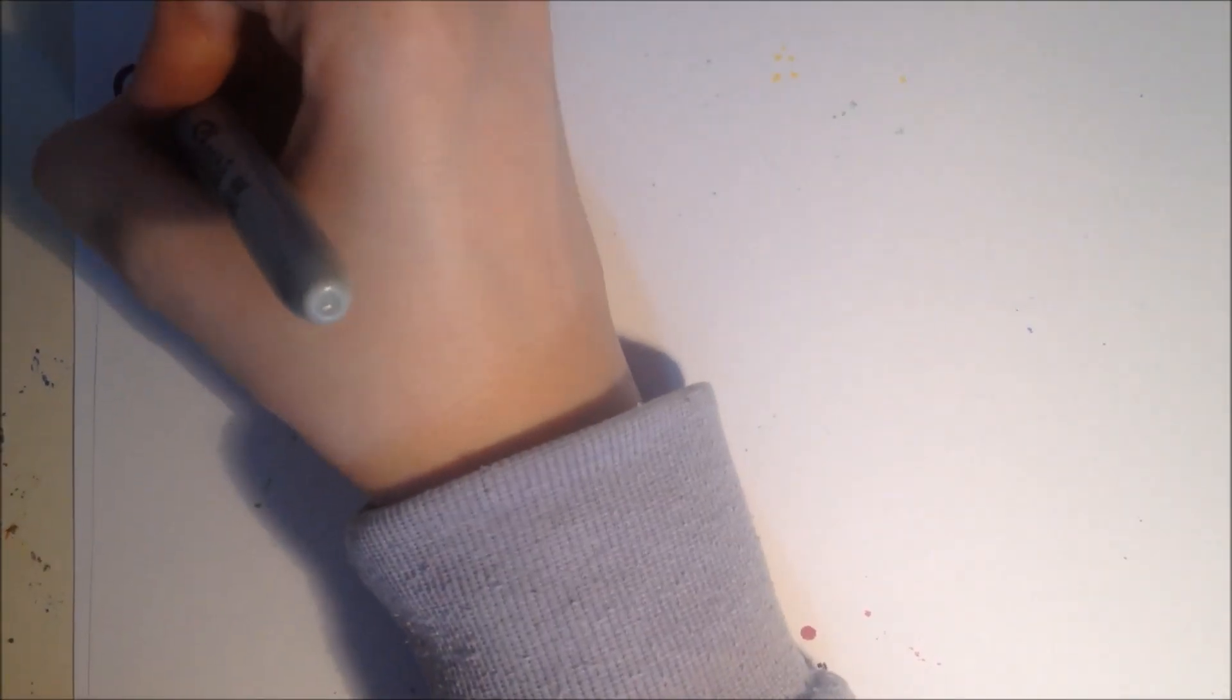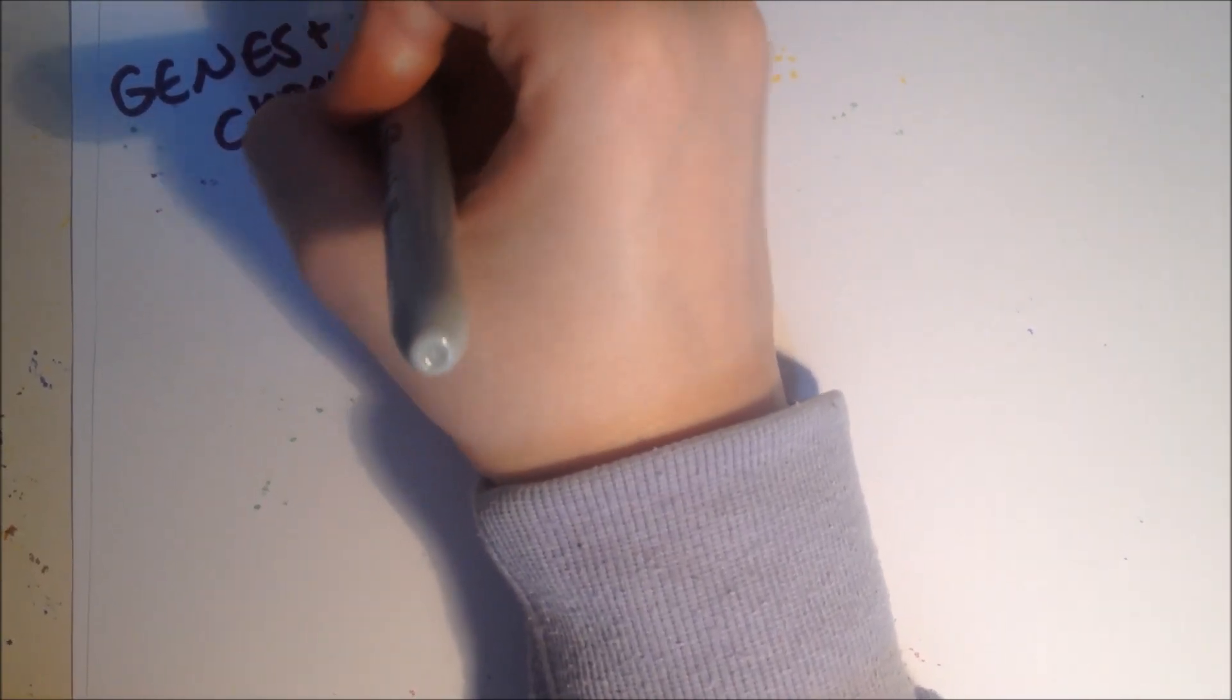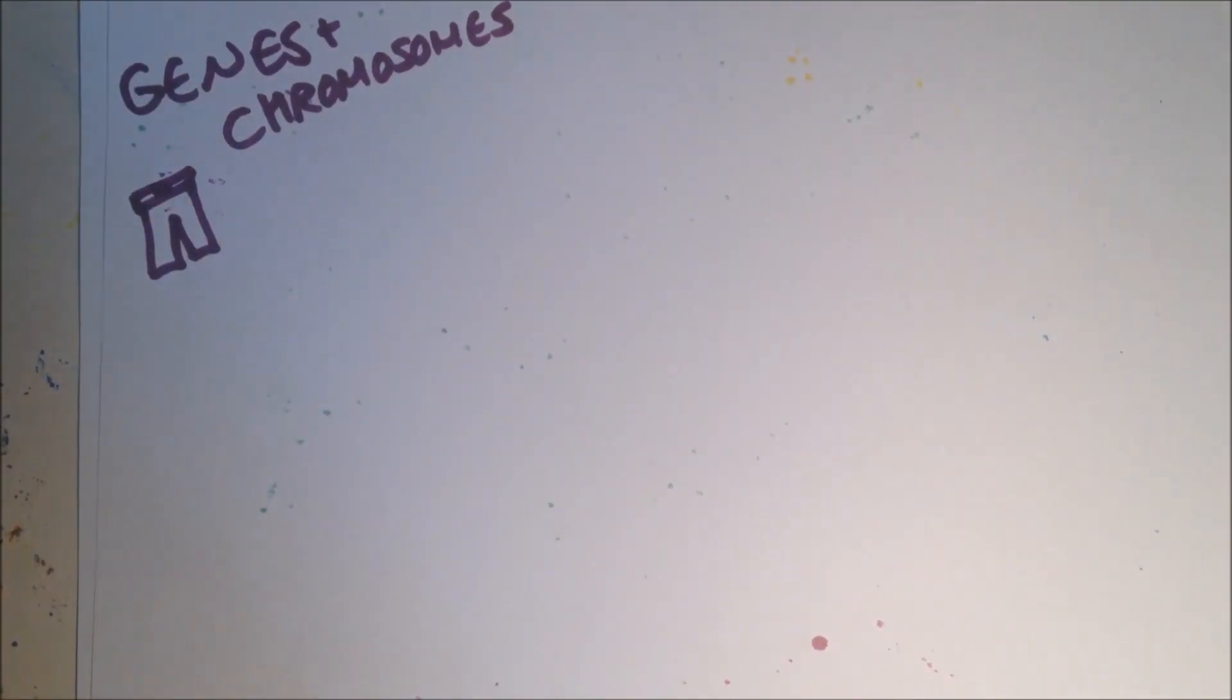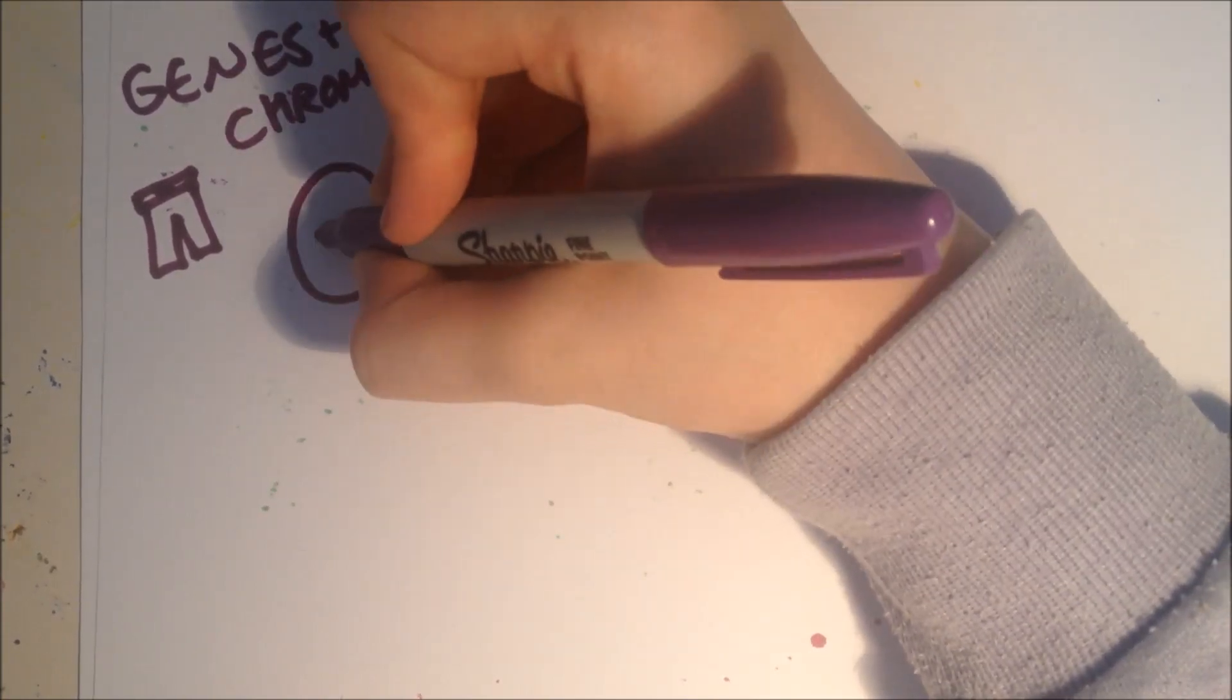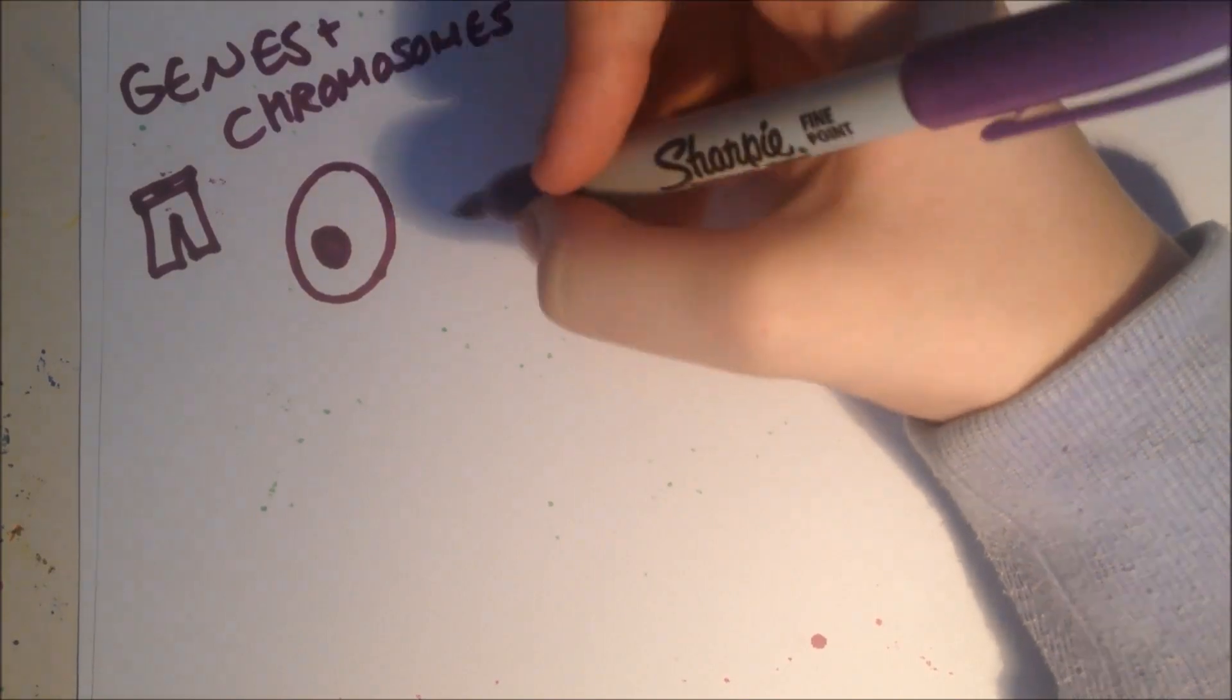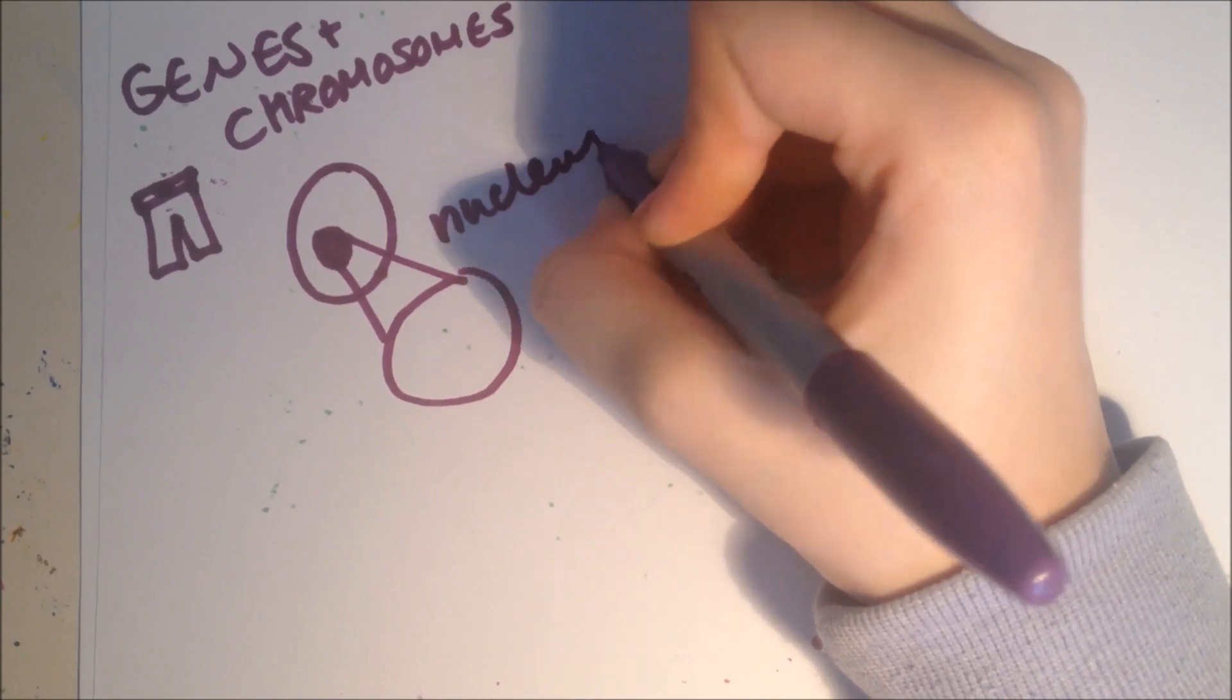Our next section is about genes and chromosomes. First of all, this is a cell. Most cells have a nucleus. If we enlarge the nucleus, it's the nucleus now.